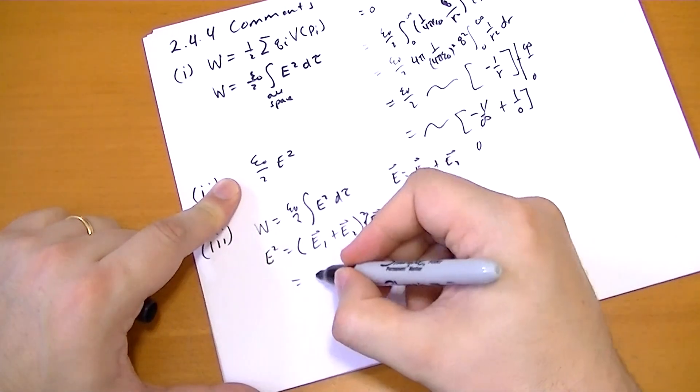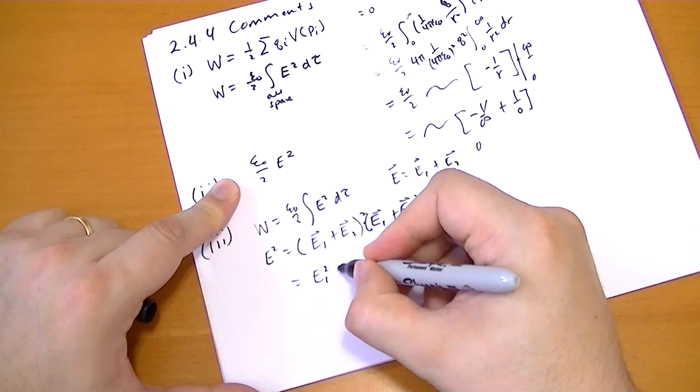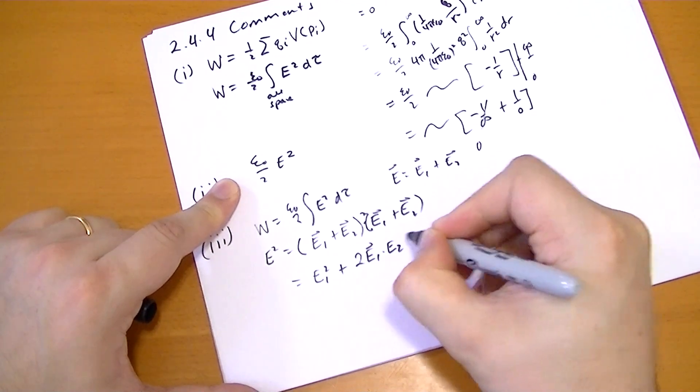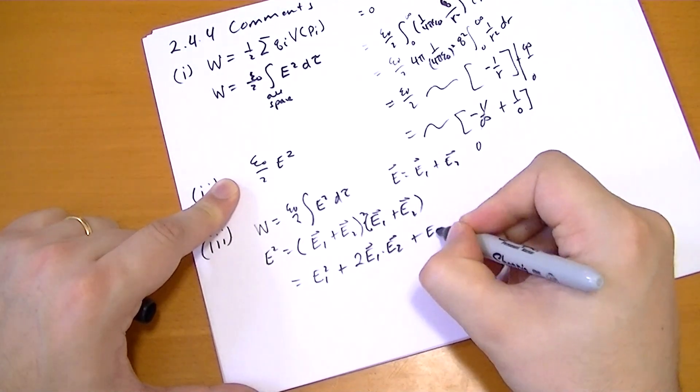So let's do that. So we have e squared plus 2 of these e1 dot e2 plus e2 squared.